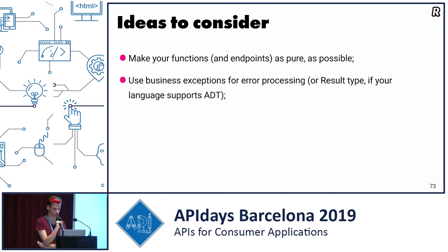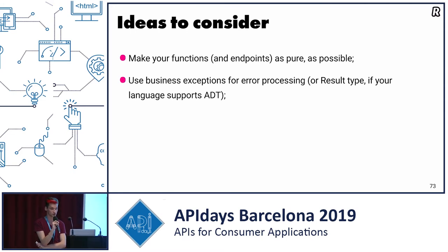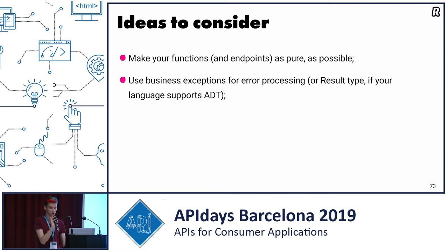Another thing is using business exceptions for error processing. It's really such a cool thing that I recommend everyone — if you are not using it, go back, see your code, and consider whether you can use it. It's very universal; you can use it in any place. For any web application, and even non-web applications, it's the most powerful way in object-oriented languages to do this small functional thing.